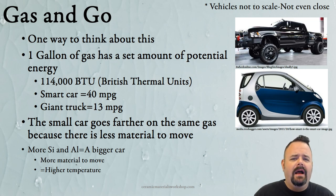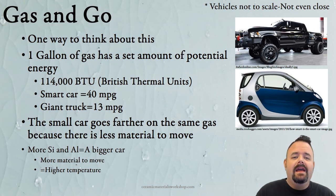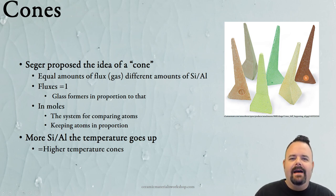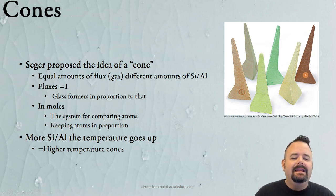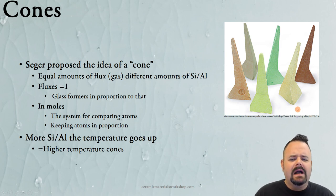The smaller car goes farther on the same gas because there's less material to move. Our glazes are exactly the same: if you have more silica and alumina — more material to move — they inherently melt at a higher firing temperature. If there's less material, it fires at a lower temperature. What Seeger did is harness that concept and put it into our cones. Every single cone, regardless of temperature, has the equivalent of one gallon of gas — what we'd call one mole of fluxes. What differs between cones is more silica and alumina, which inherently reflects a higher temperature. This is all done in moles, the system used in chemistry to put molecules in proportion to each other.